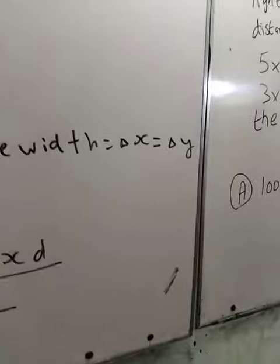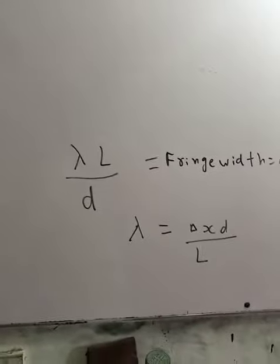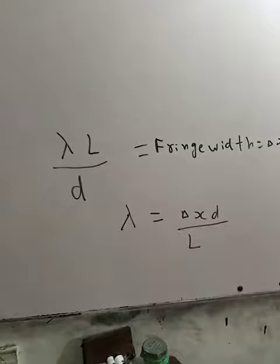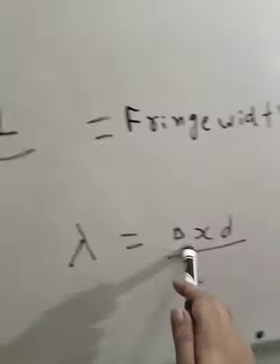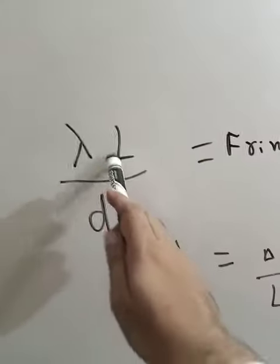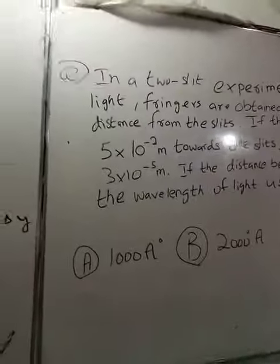The formula is del x and del y, which is the same as lambda l upon d. Lambda is the wavelength. If it is for lambda, then of course the del x and del y will be multiplied. L will be divided.